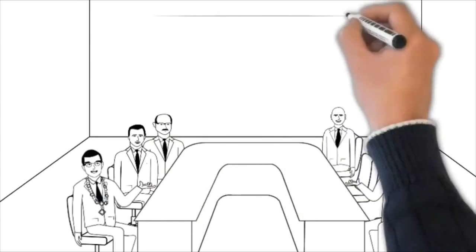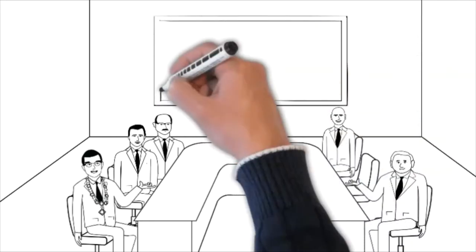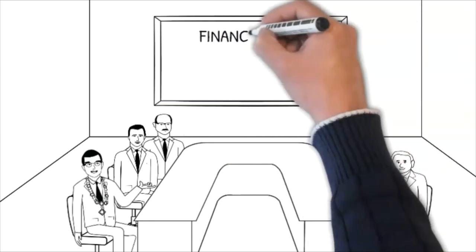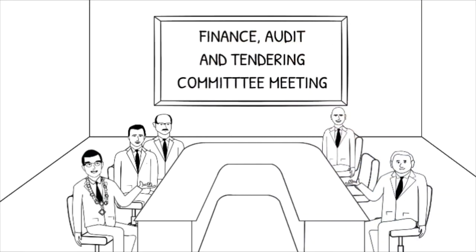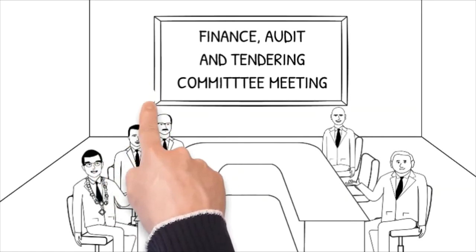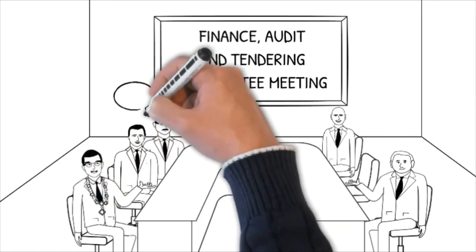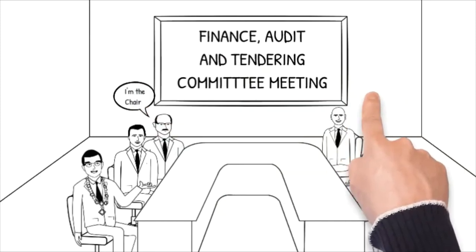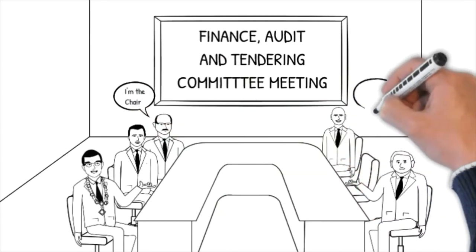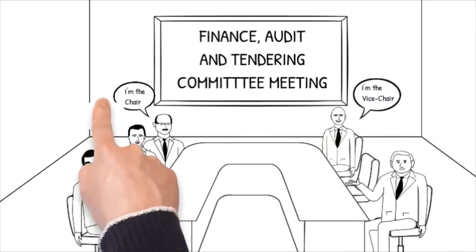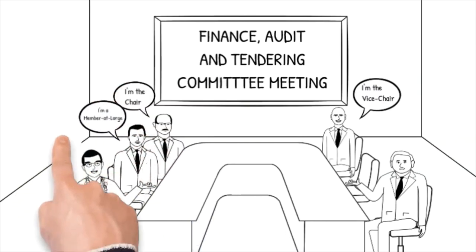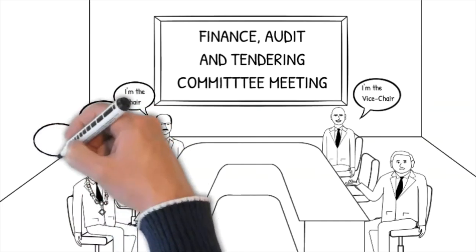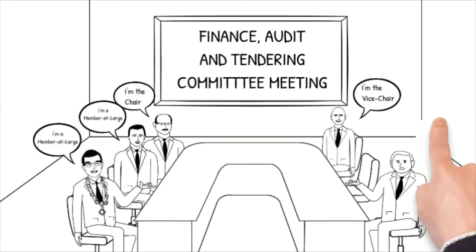Standing committees are smaller groups made up of members of council, the mayor, the CAO, and staff. They focus on specific topics and represent city departments as outlined in the standing committee terms of reference set by council and published on the city's website. Several members of council sit on each standing committee with one serving as the chairperson, one as vice chairperson, and the others as members at large. The City of Charlottetown uses this committee structure to process matters of importance and bring recommendations forward to council in the form of resolutions for a vote.